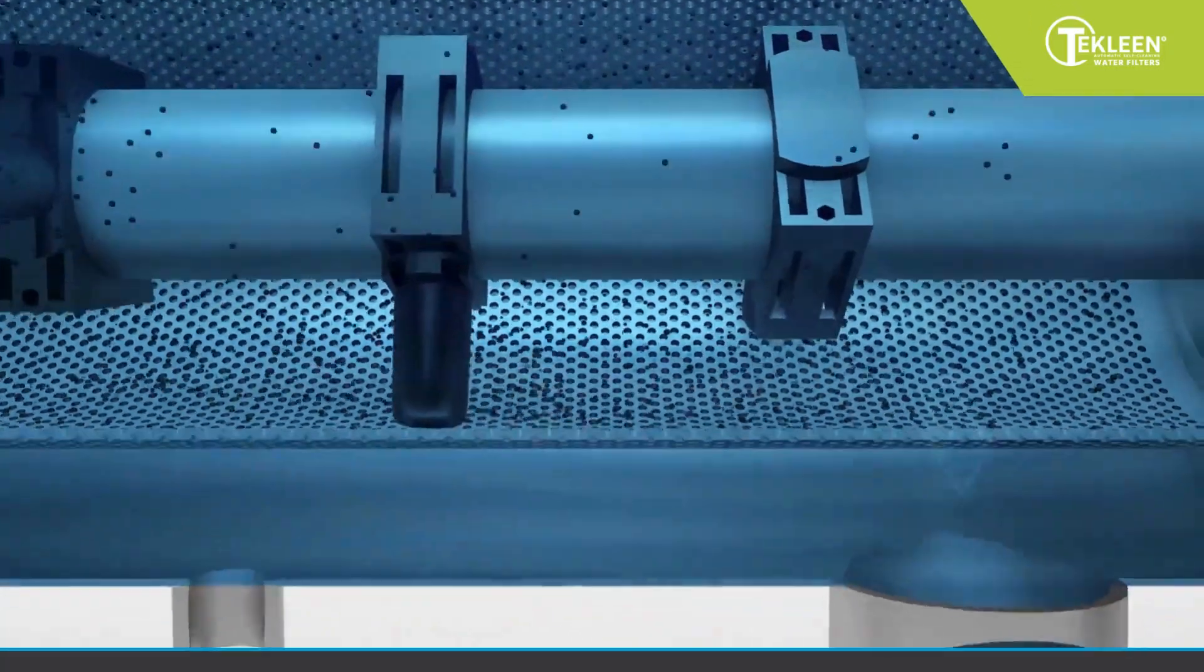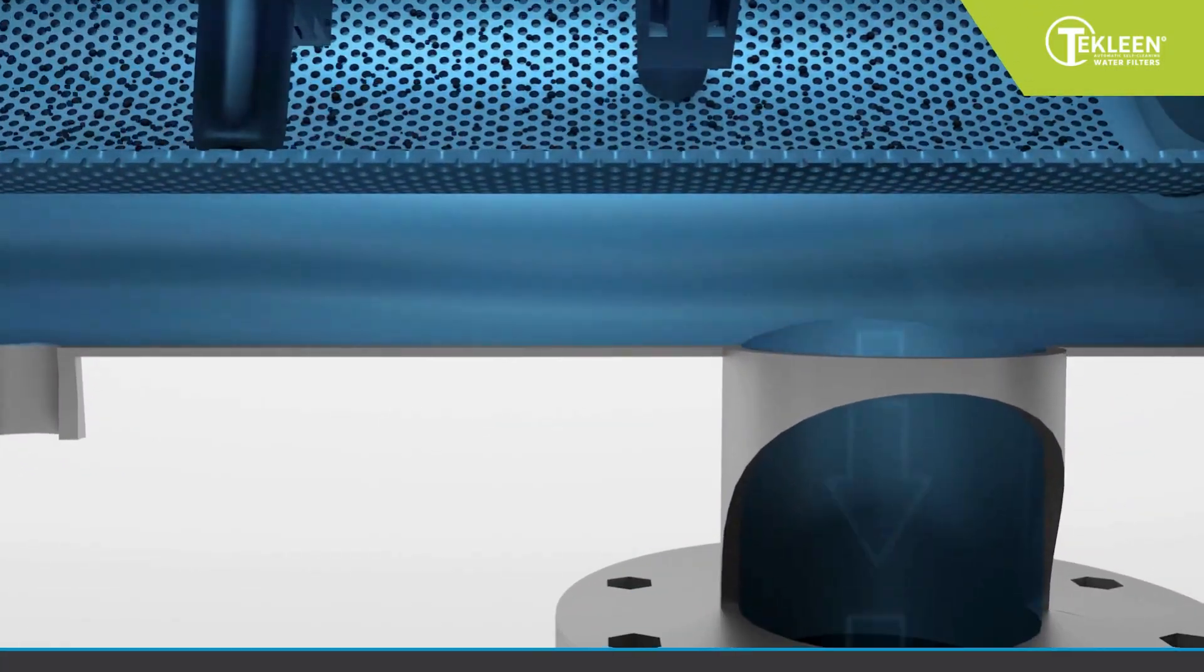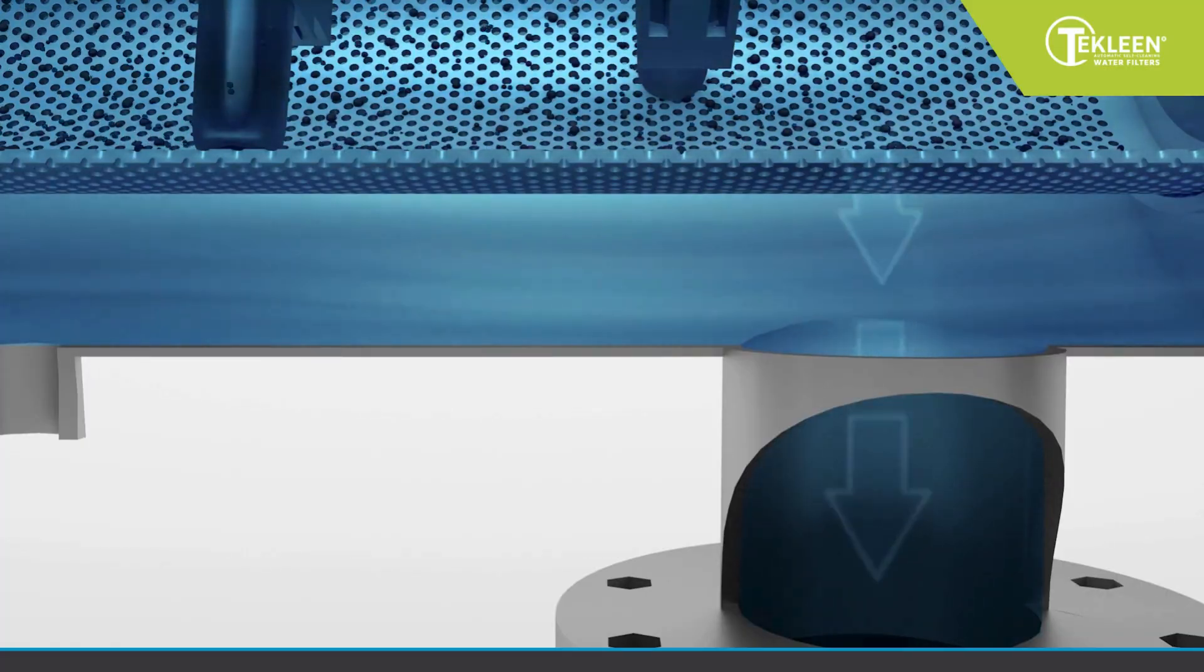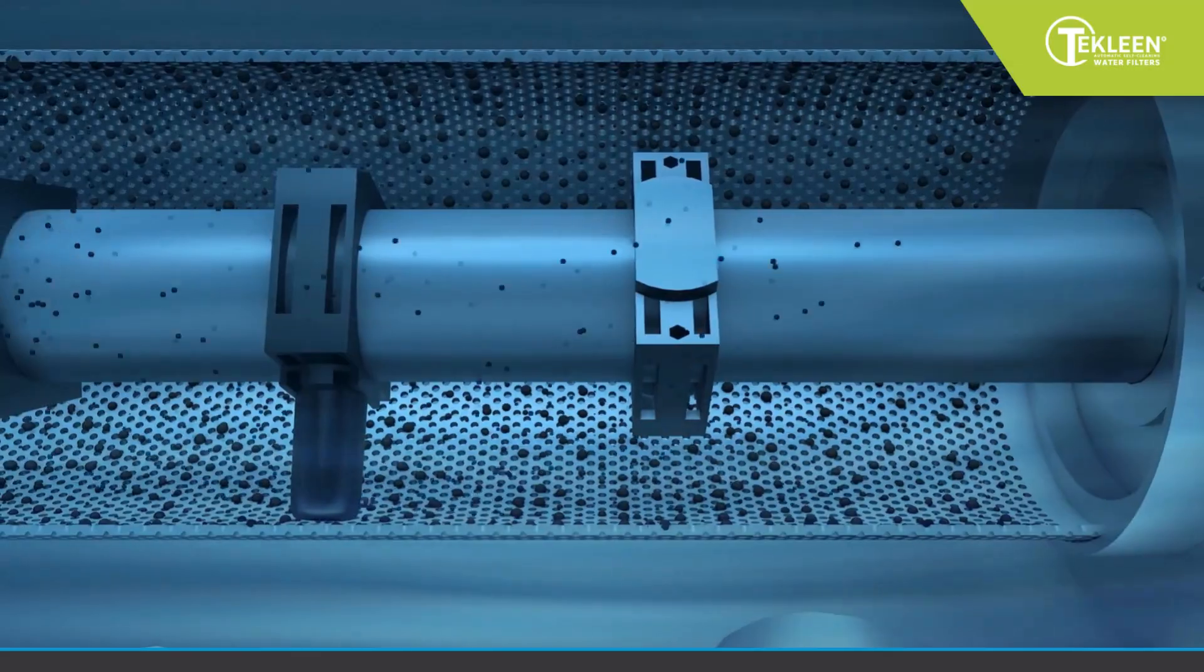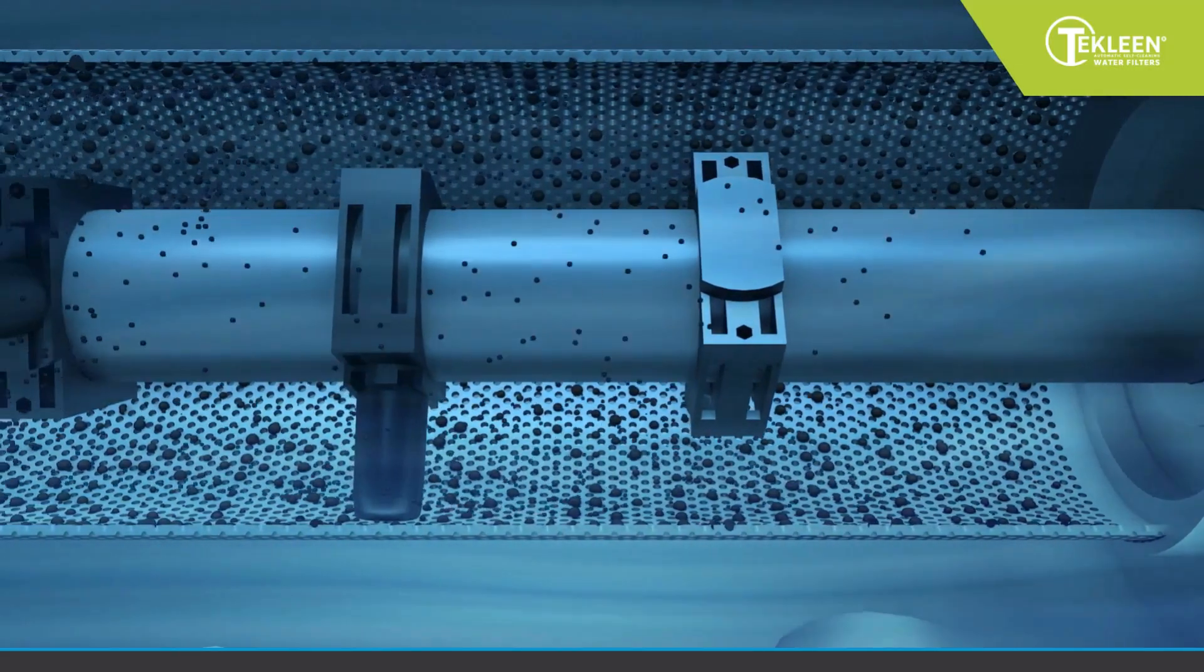Clean water exits the filter through the outlet, while dirt and other particulates are trapped on the inside of the screen. Over time, the trapped dirt accumulates and forms a dirt cake effect on the filter screen mesh.